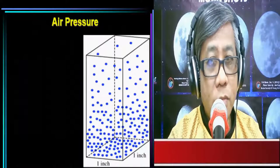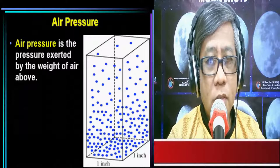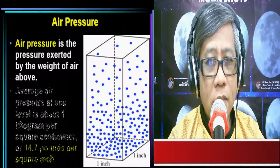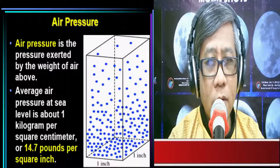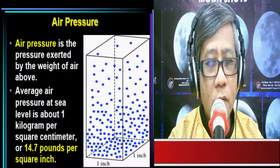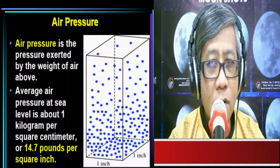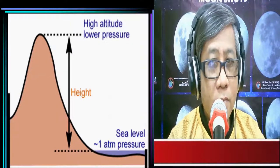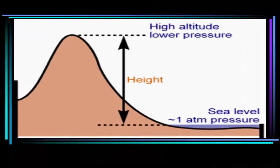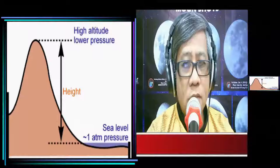By definition, air pressure is the pressure exerted by the weight of the air. The weight of the air at sea level is about one kilogram per square centimeter, equivalent to 14.7 pounds per square inch. If you decide to climb a mountain like Mount Everest, as you go higher the air pressure decreases. At sea level, the air pressure is one atmosphere or 14.7 pounds per square inch.